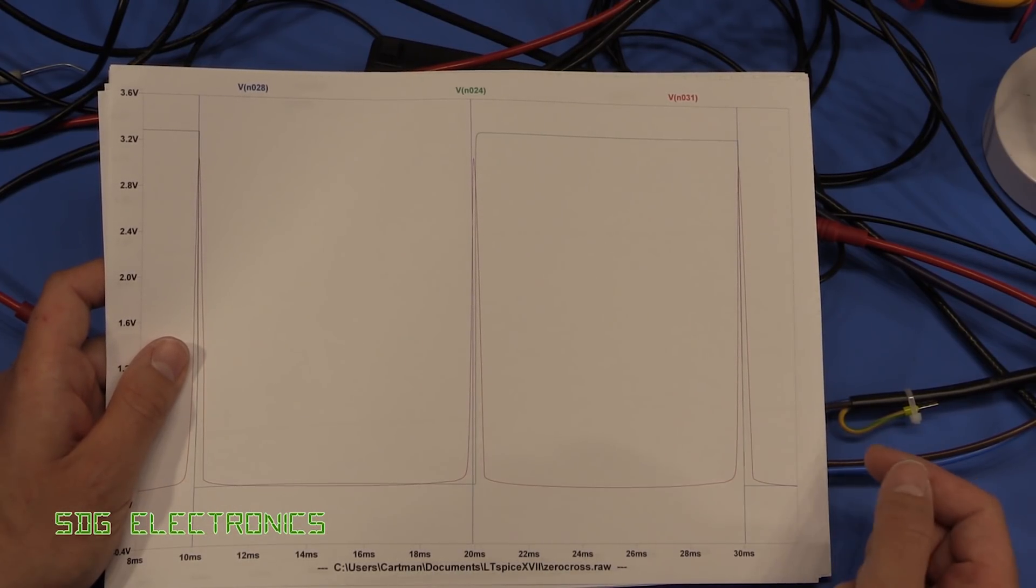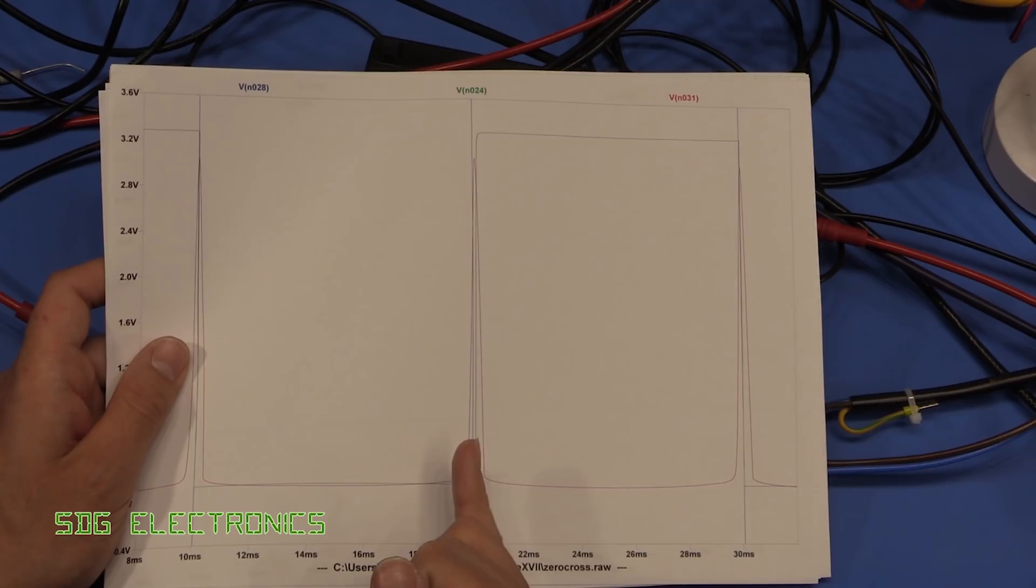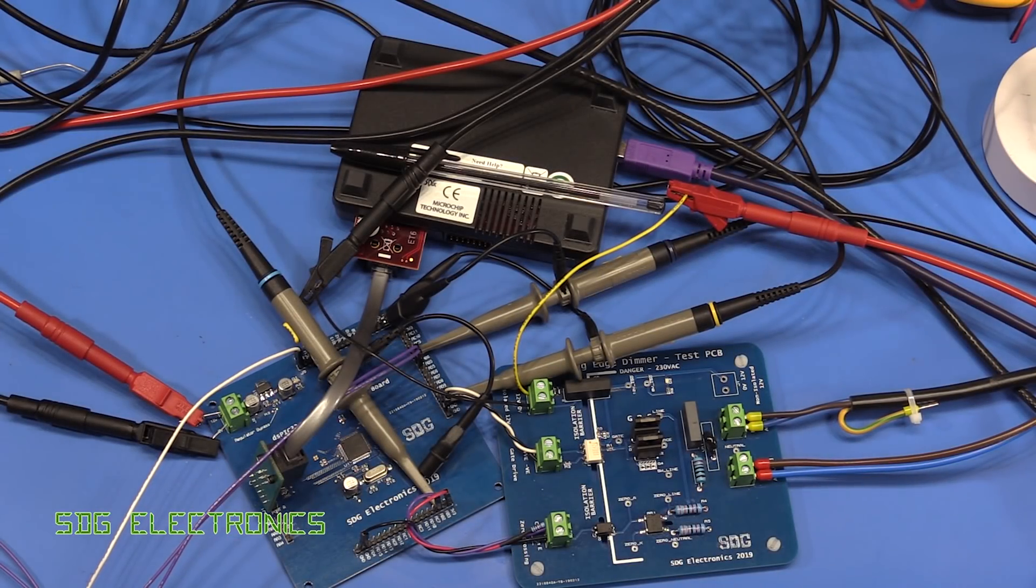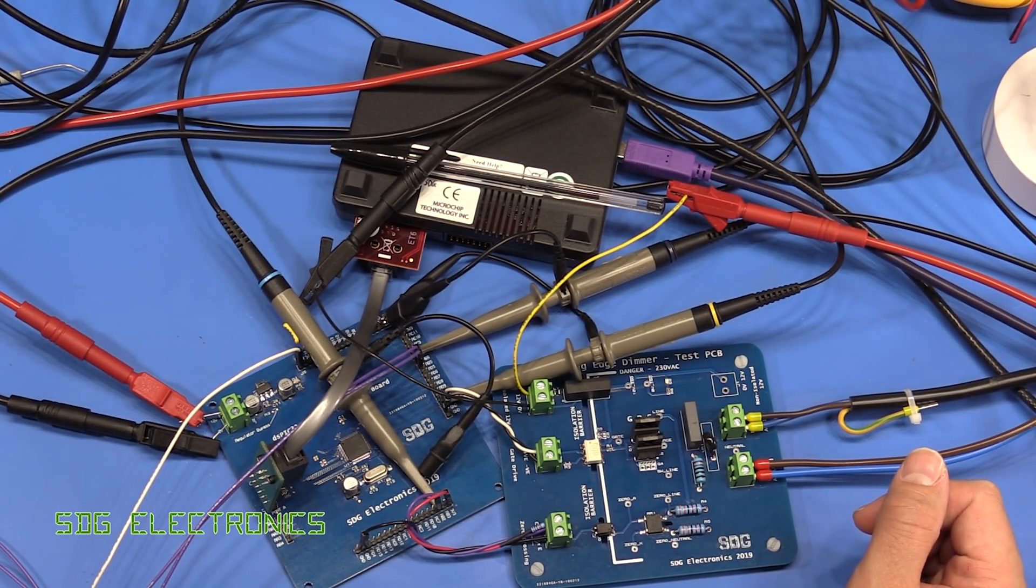So it's using the history of the previous one to do that and it means that I can hit the zero crossing point bang on the zero point. And hopefully what that will mean is that we don't blow up these MOSFETs when we try again.